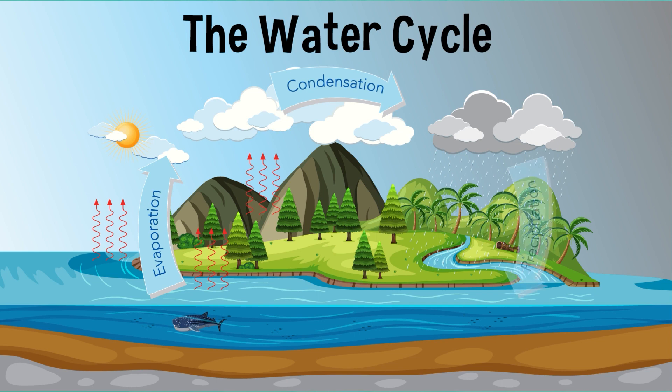Finally, precipitation occurs when the water molecules come together and the water falls from the sky as rain, snow, and sleet. This precipitation then becomes surface water, and the cycle is complete.